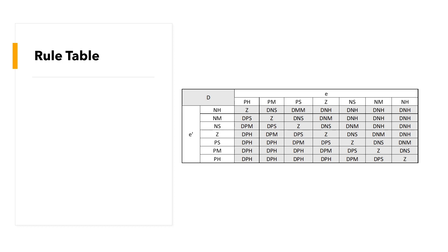Here we have our whole rule table. We have two inputs: E (error) and D (delta error). In our next video, you can go in detail on the operation of the table and also how to model it in MATLAB Simulink software. Or you can check the description below to learn more about it.